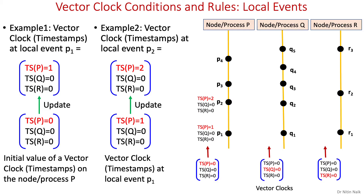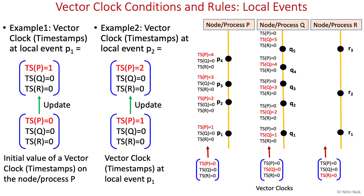The local timestamp is incremented by 1, and if P1 happened before P2 then the timestamp of P1 is less than the timestamp of P2, which is the case here. Similarly, the local timestamp will be incremented for each subsequent event on node P. On node Q, when a new local event Q1 has occurred, only the local timestamp of node Q is incremented. Similarly, the local timestamp will be incremented for each subsequent event on nodes Q and R.